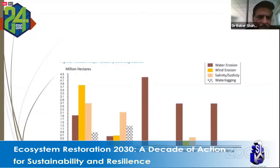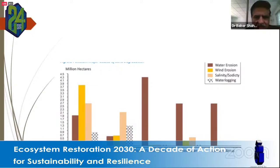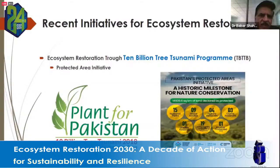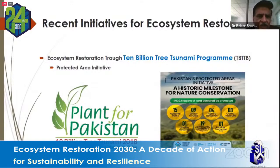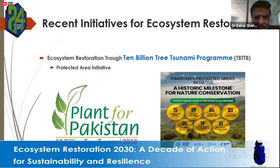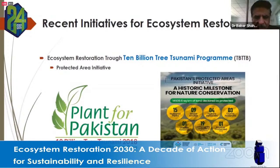In Punjab, wind erosion is the major cause of land degradation, while water erosion is the major culprit overall. Key government initiatives include the 10 Billion Tree Tsunami project, which began as a continuation of Khyber Pakhtunkhwa's Billion Tree Afforestation project. The target of one billion trees was achieved by mid-2021, and the United Nations acknowledged Pakistan's success in ecosystem restoration, selecting Pakistan as host for World Environment Day 2021.